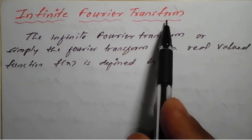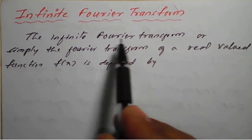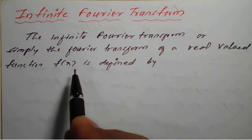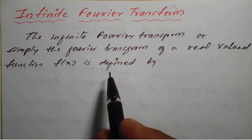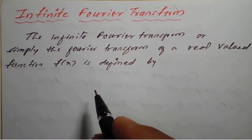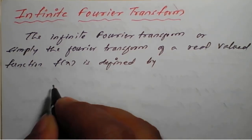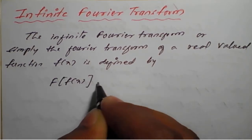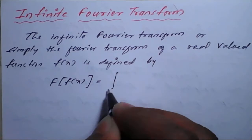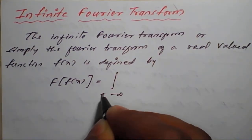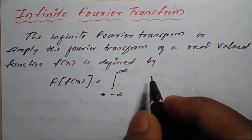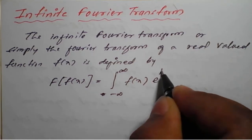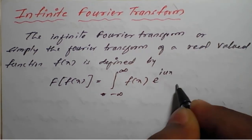Infinite Fourier transform — we will see the first part. The infinite Fourier transform, or simply the Fourier transform, of a real-valued function f of x is defined by: capital F of f of x is equal to the integration from minus infinity to plus infinity of f of x into e raised to i u x into dx.